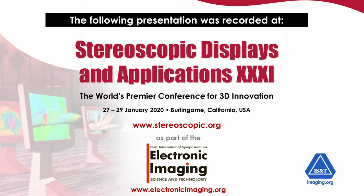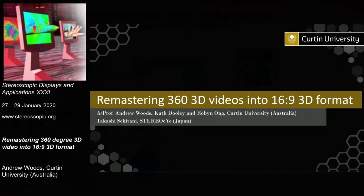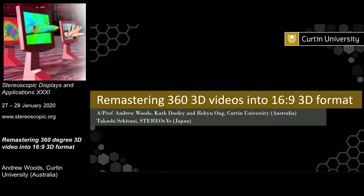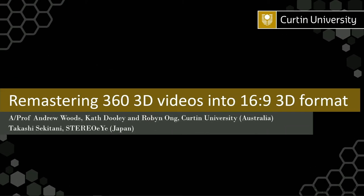This is an impromptu standby presentation — if you're here for the scheduled presentation, I'm sorry to disappoint. But hopefully this will be interesting as well. This is essentially about allowing us to remaster or reformat 360 3D content that's been captured with a 360 3D camera into a format we can see on a widescreen display like this in 3D, or a desktop display or a 3D home TV.